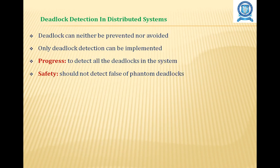The techniques of deadlock detection in distributed systems require two properties: progress and safety. Progress means the method should be able to detect all deadlocks in the system. Safety means the method should not detect false or phantom deadlocks — that is, it should not report deadlocks that do not exist.